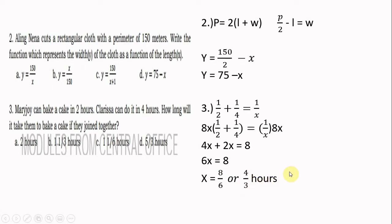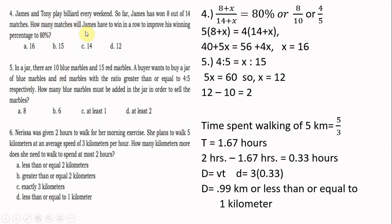Number four: James and Tony play billiards every weekend. James has won 8 out of 14 matches. How many more matches must James win in a row to improve his winning percentage to 80%? The equation is (8 plus x) over (14 plus x) equals 4/5. By cross multiplication: 5 times (8 plus x) equals 4 times (14 plus x). Using the distributive property: 40 plus 5x equals 56 plus 4x. Isolating x gives x equals 16. The answer is letter A.